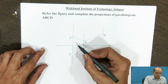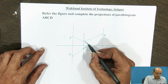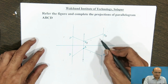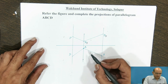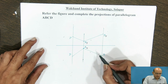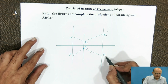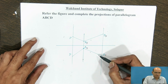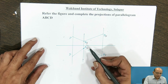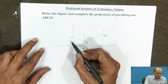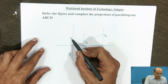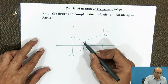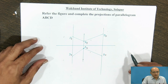Line AB in the front view (AF, BF) is given, and AB in the top view (AH, BH) is known to us. The other side, AD, in both the front view and top view, is also given to us.